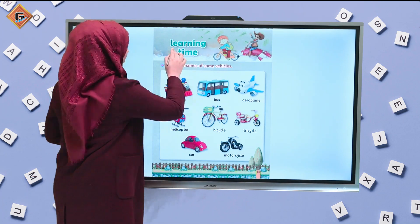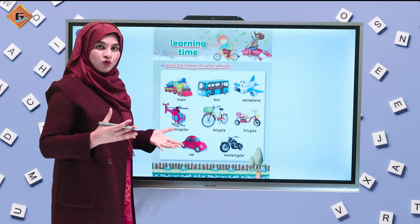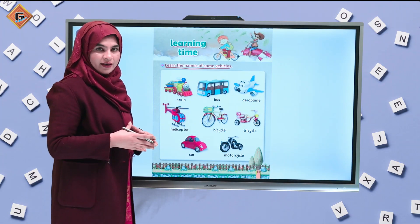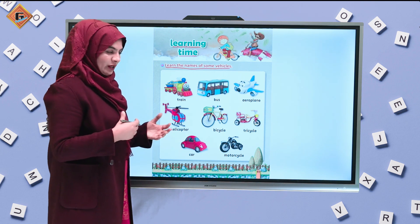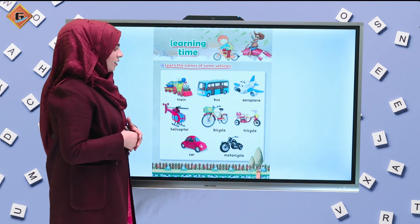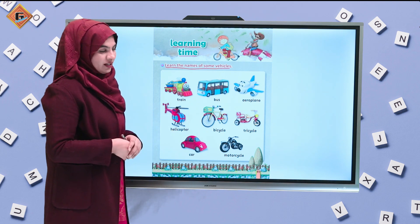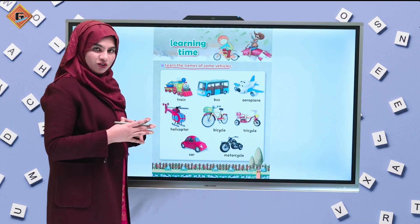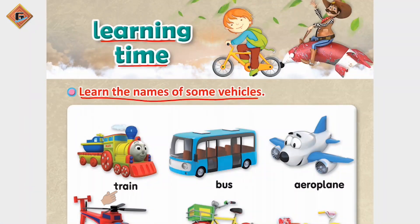This is page number 85 — learning time — learn the names of some vehicles. Vehicles means those things we use to travel from one place to another, or to carry things from one place to another. So we are going to learn their names. First of all, it's a train — train.